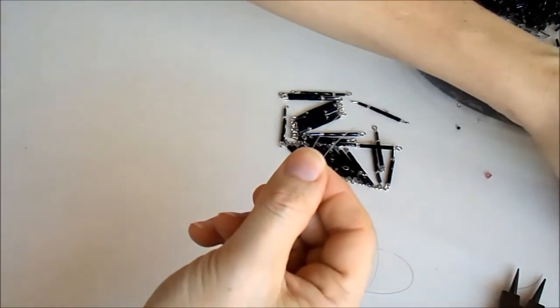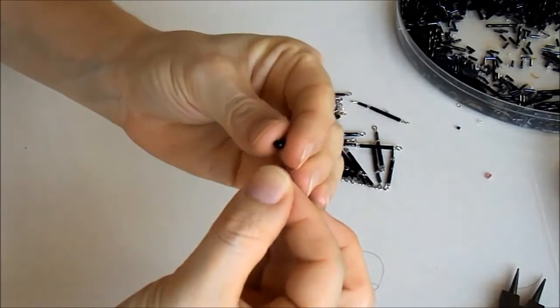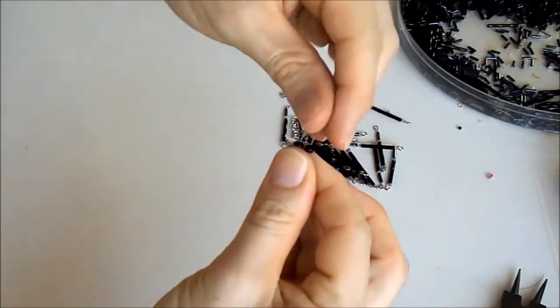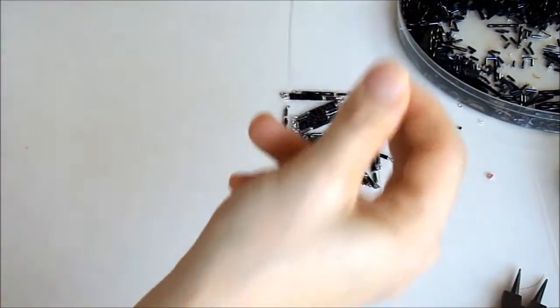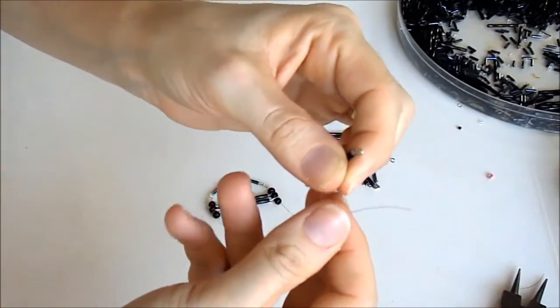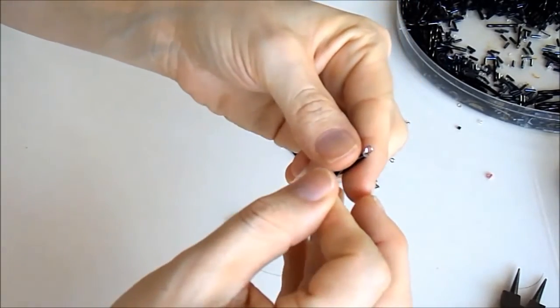Mais uma miçanga para cada lado. E assim eu vou colocando os alfinetes sempre na mesma posição. E separando eles com uma miçanga. Coloco assim todos os alfinetes.